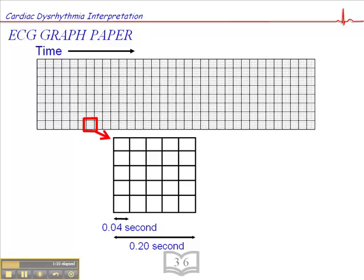But for rhythm interpretation we're interested in the time reference in the horizontal plane. So the graph paper is divided into dark 5 mm squares, and those are further subdivided into single mm squares that we can see here.